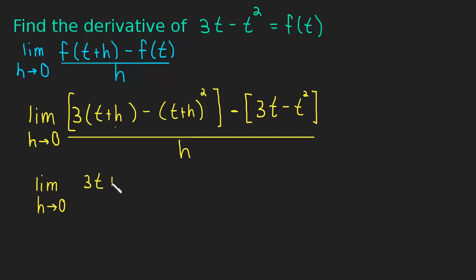This is going to be 3t plus 3h, so I just expanded that. Minus. And then this minus sign, first we can expand, and then we can distribute that minus sign. So this is going to be t squared plus 2th plus h squared. To distribute that minus sign, I'm just going to erase these brackets and change all the signs. So these are going to be all minus signs. And then we have minus 3t plus t squared. So this minus sign also distributes. All over h.